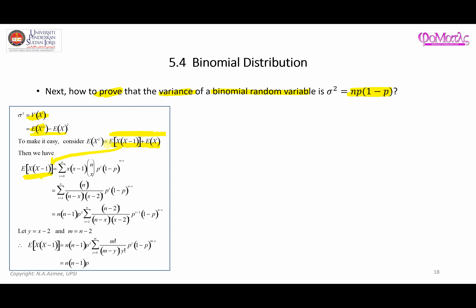These are the steps for finding this function. You will come across this answer, and after that you can use a simple substitution where you let y equal x minus 2 and m equal n minus 2, and you'll be able to get the result for E[X(X-1)]. We're not done yet — you have to go further to get the variance of x, but this trick helps you show that the variance is np times (1-p).